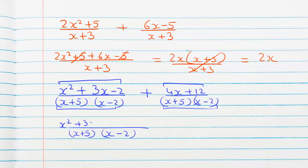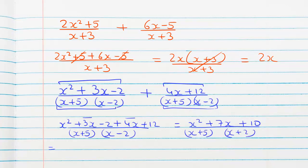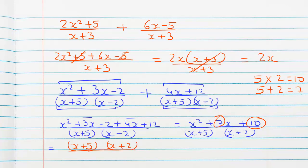We write the numerator as x² + 3x − 2 + 4x + 12. Combining like terms: x² plus 7x plus 10, over (x+5)(x−2). Now we factor the numerator — we need two numbers that multiply to 10 and add to 7, which is 5 and 2. So the numerator factors as (x+5)(x+2), over (x+5)(x−2). The (x+5) terms cancel and we are left with (x+2) over (x−2) — wait, that simplifies to 1 as our answer.